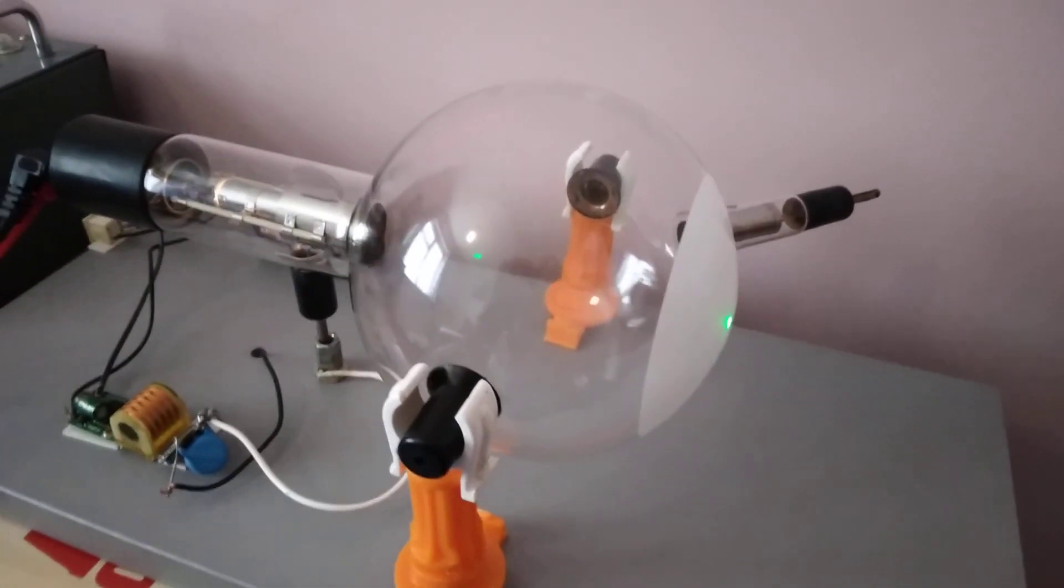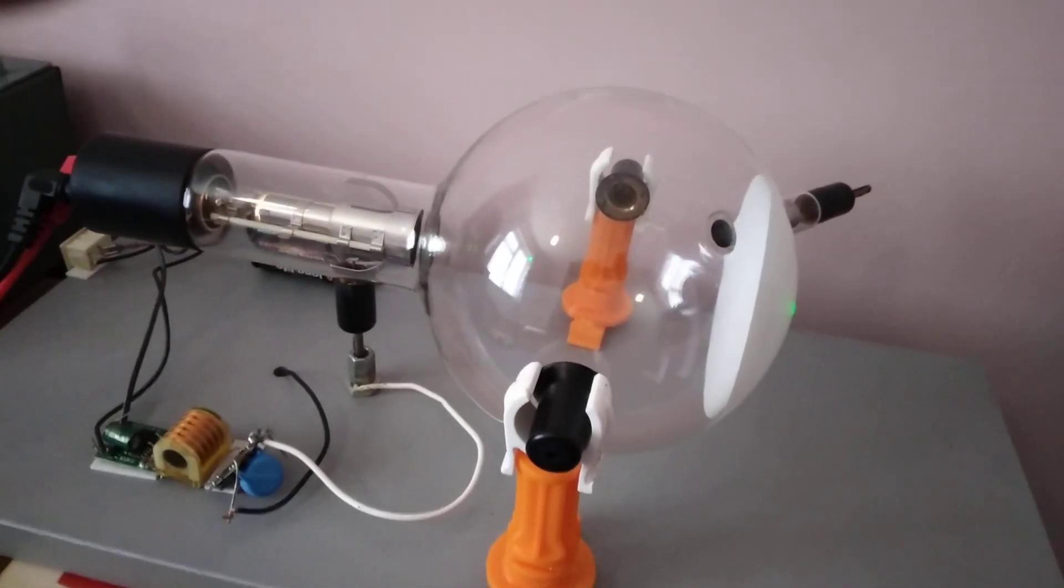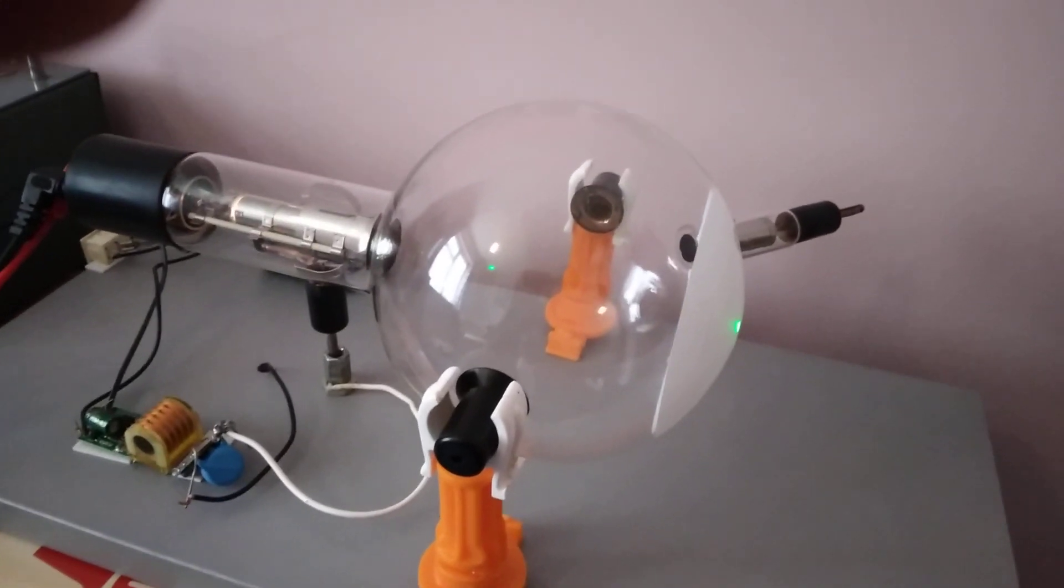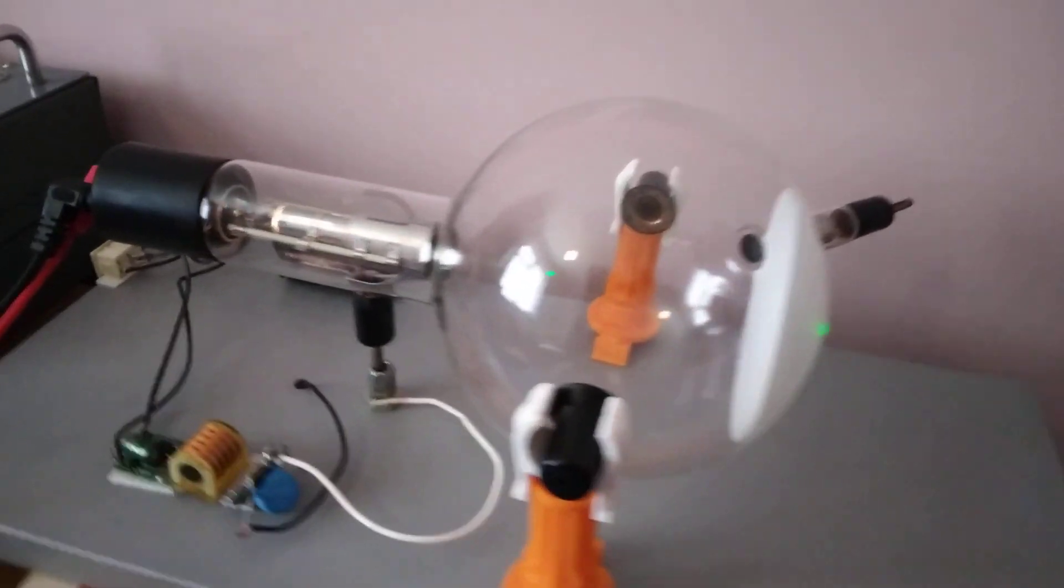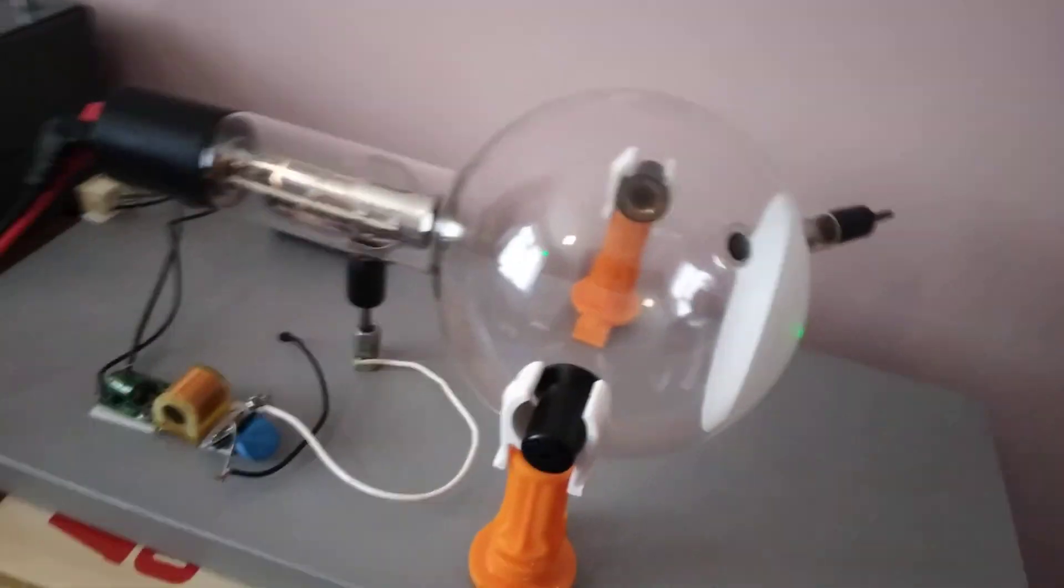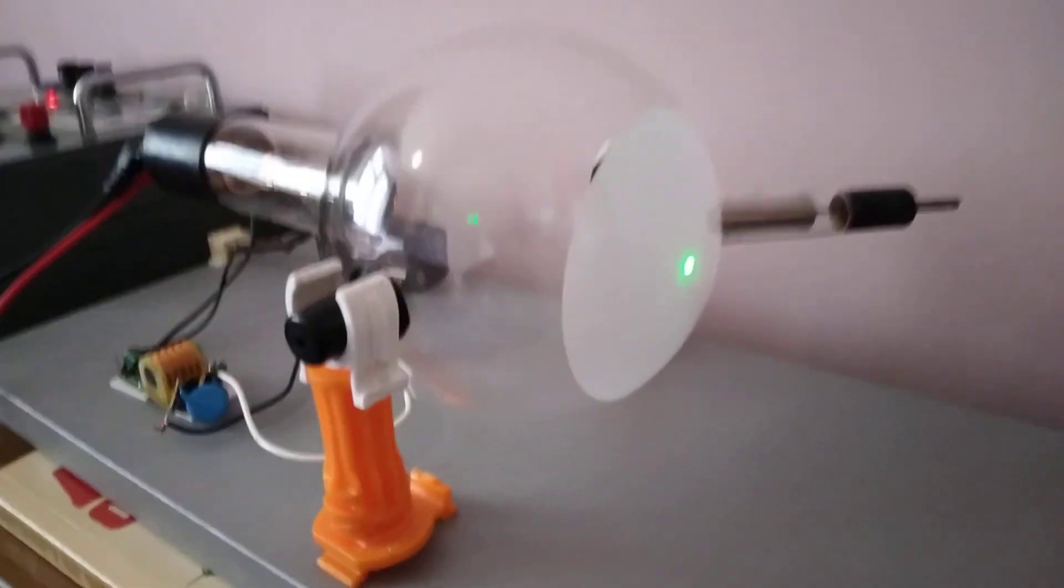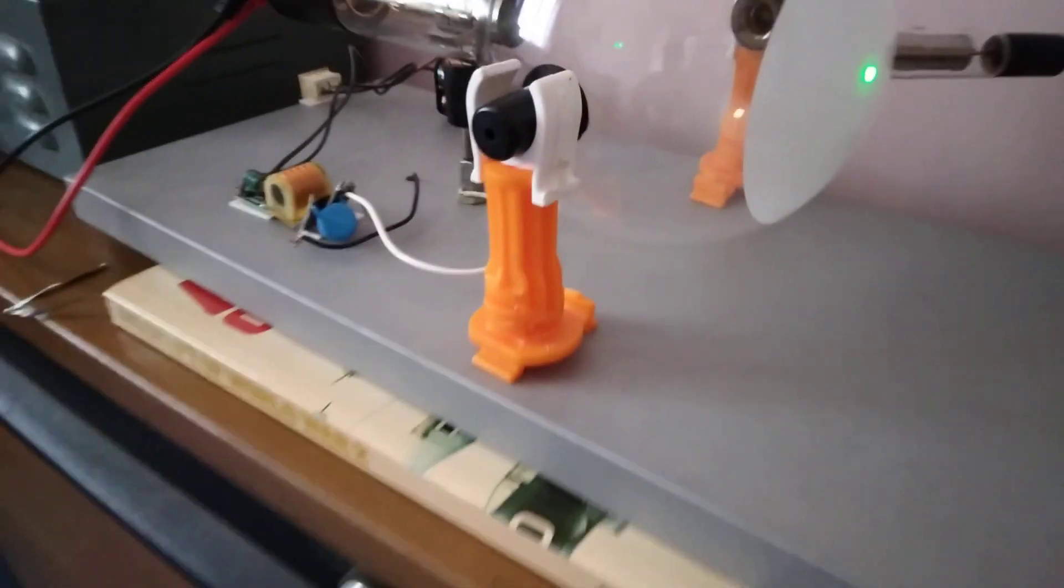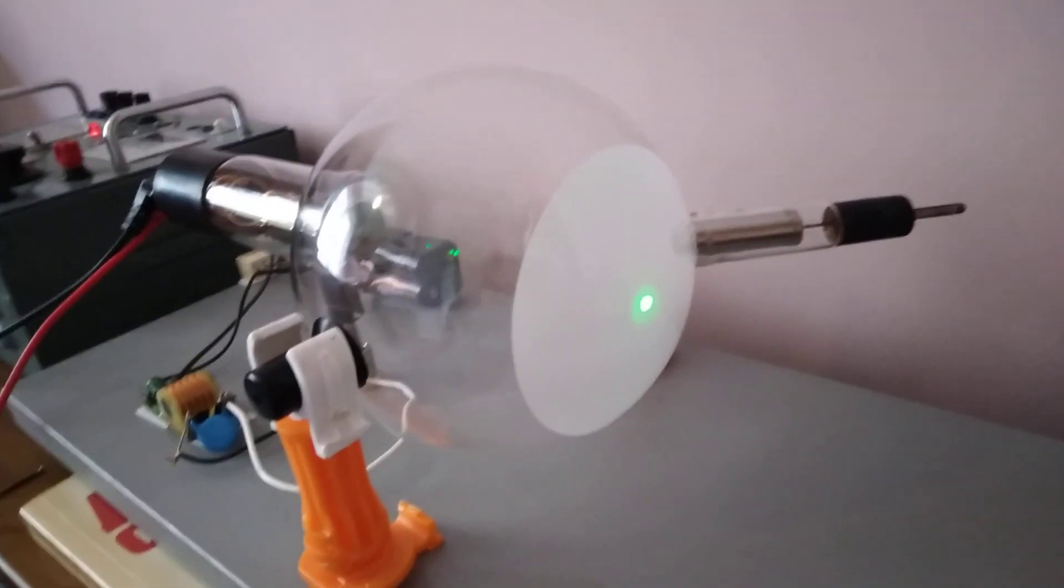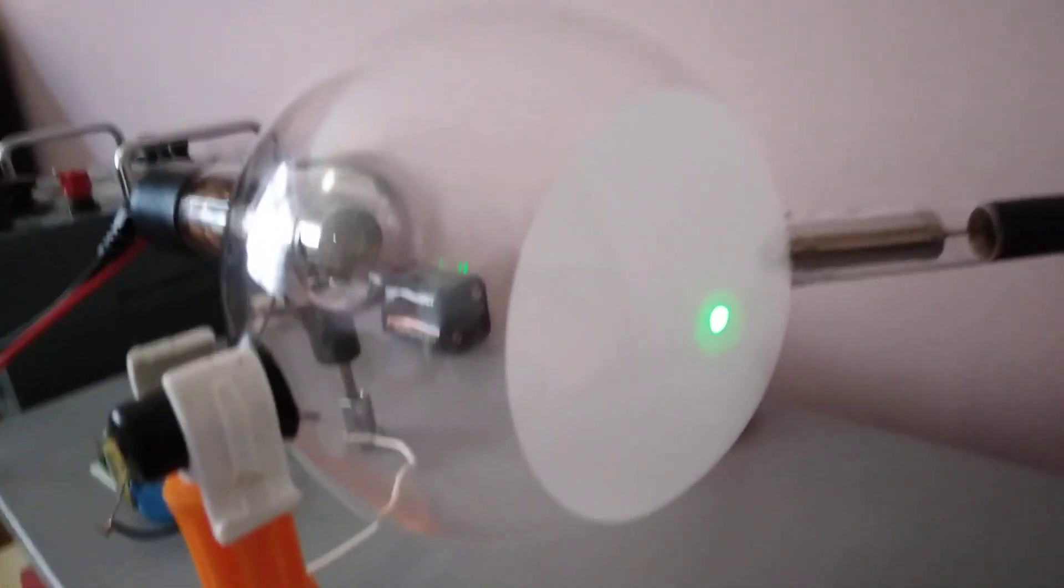The fascinating thing with electron beams is you can deflect them with magnetic or electric fields, because obviously electricity and magnetism are interlinked. If you were to get a speaker magnet, which I have here, quite a large one out of a hi-fi speaker, this will influence that.